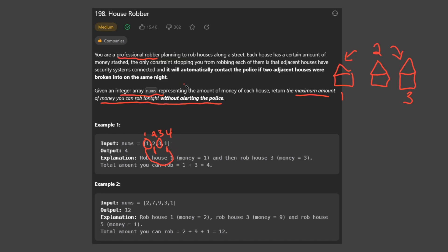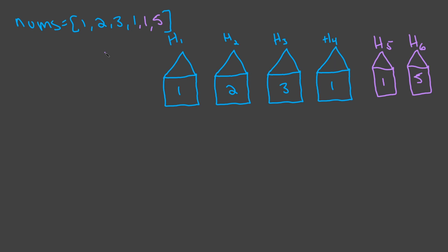So if you've ever wanted to rob houses, this is the perfect problem for you. I've modified the example from the original problem and added house 5 and house 6 with values of 1 and 5. A good way to approach this problem is by thinking about it backwards.